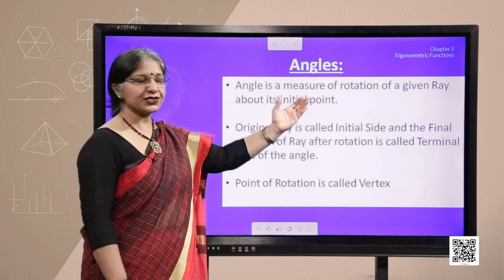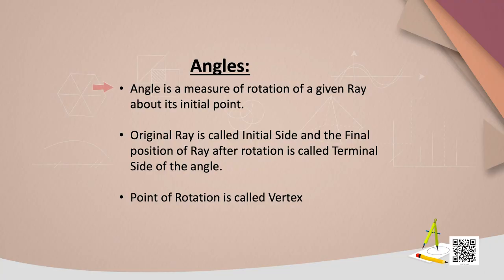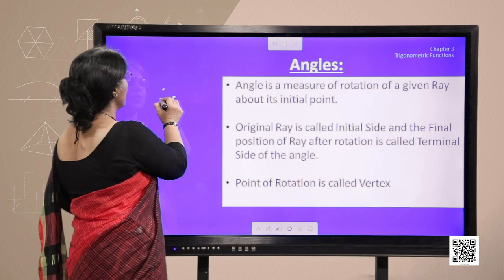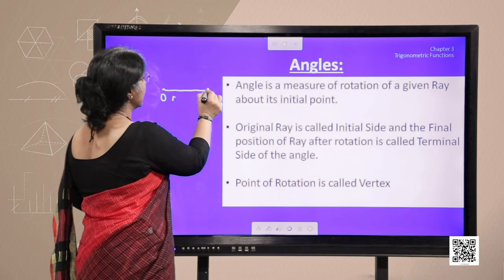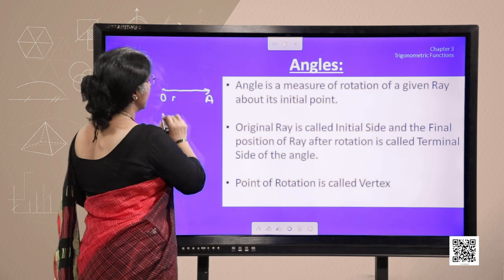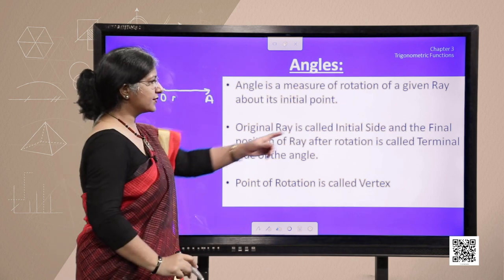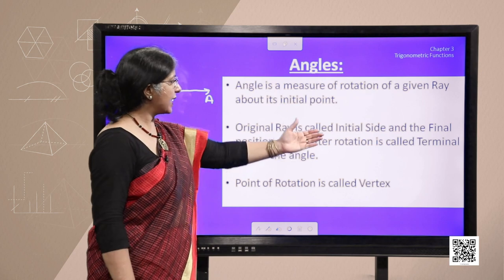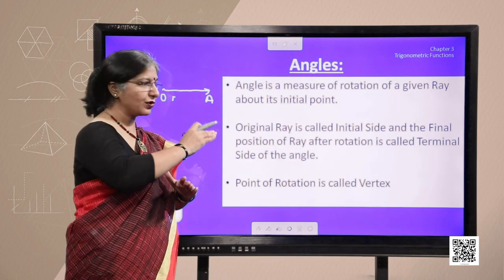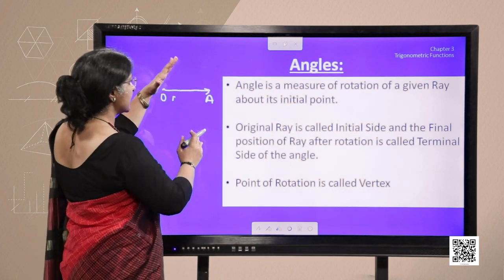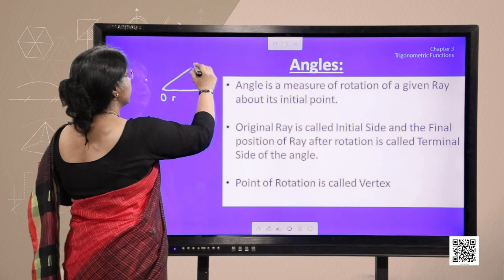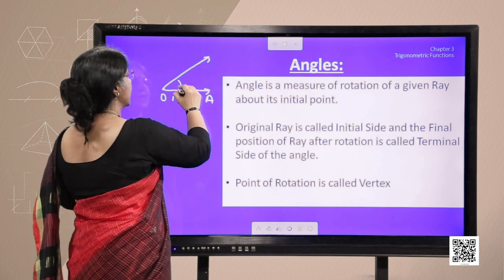Angle is a measure of rotation of a given ray about its initial point. If we consider a point O and a ray leading to A, this is initial side, original ray and the final position of the ray after rotation. If it rotates anticlockwise, it traces an angle like this.